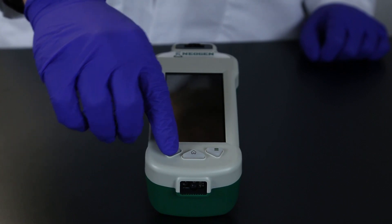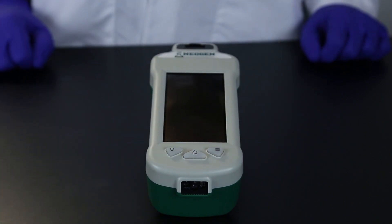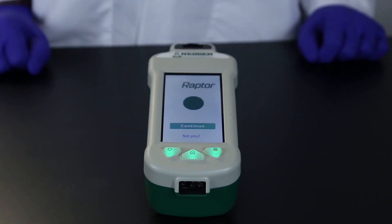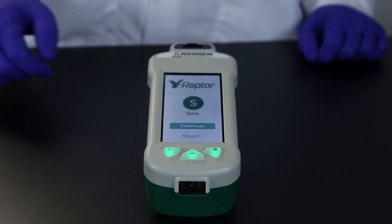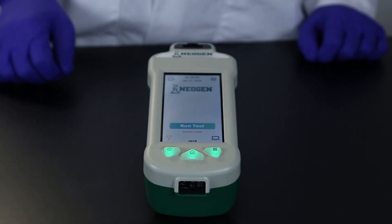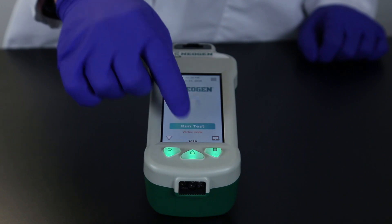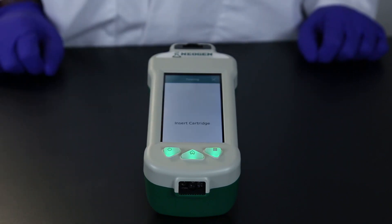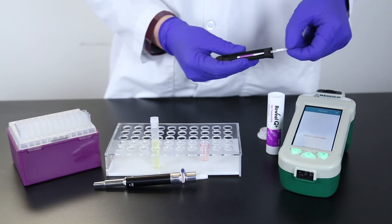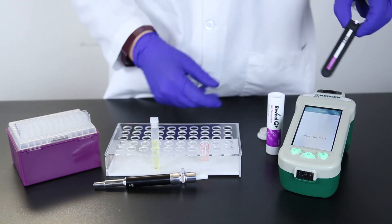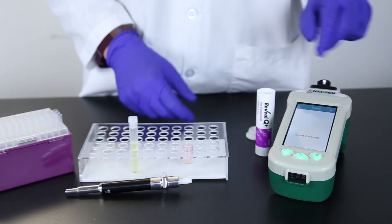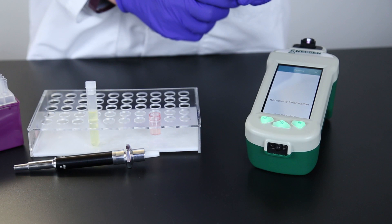Turn on the Raptor Solo by pressing the power button on the bottom left hand corner. The system will initialize and display the home screen. Press the run test button. Place a test strip into the Raptor cartridge. Place the cartridge in the Raptor Solo system. The Raptor Solo system reads the barcode on the strip.